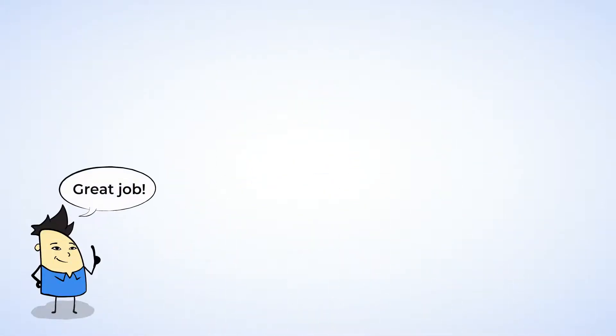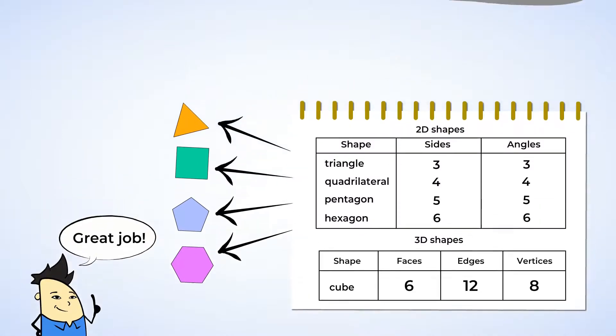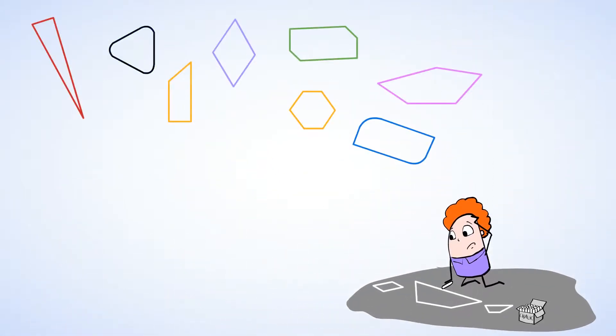Great job! You've really gotten good at counting the sides and angles of a shape to figure out if it's a triangle, quadrilateral, pentagon, or hexagon. And this is great because Will needs our help. He's been drawing shapes of his own, but he doesn't know how to label them.